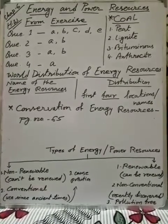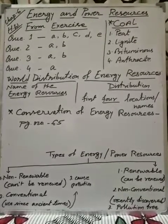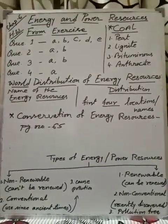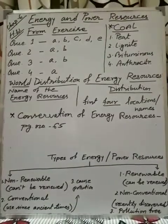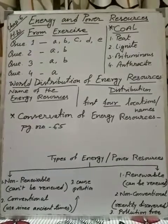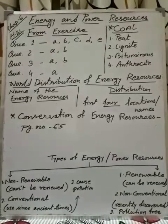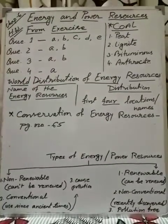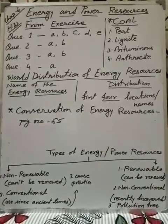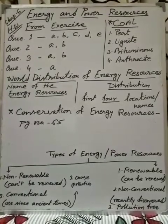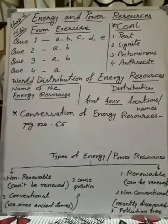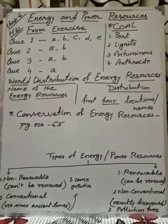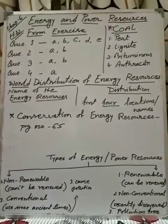Syllabus-wise we will know about only five types of energy resources and only their distribution — where they are found. Not more than that. Our first example of non-renewable energy is coal. About coal we are going to know in some detail. Coal is basically of four types according to the carbon quantity, because coal contains carbon and the amount varies. On the basis of carbon quantity we get four types of coal.